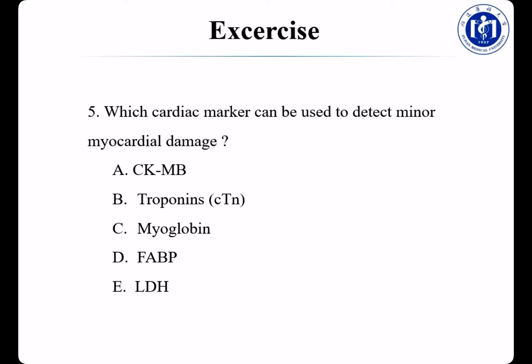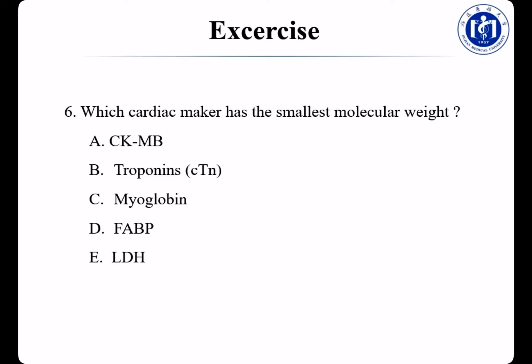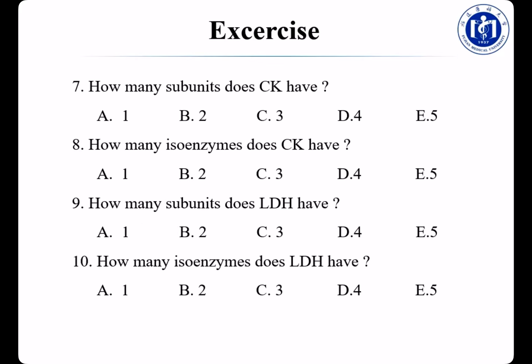For early diagnosis of AMI, which is the best? The answer is myoglobin and FABP. Which isoenzyme of LDH increases most rapidly after AMI? The answer is LD1. Which cardiac marker can be used to detect minor myocardial damage? Only troponins can detect minor myocardial damage, so the answer is troponins. Which cardiac marker has the smallest molecular weight? The answer is myoglobin.